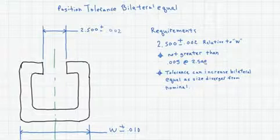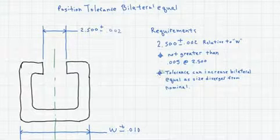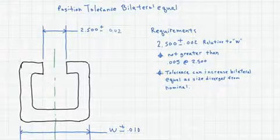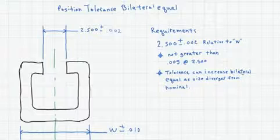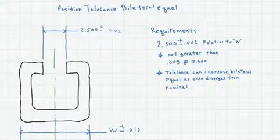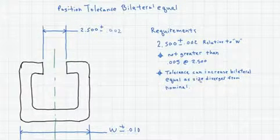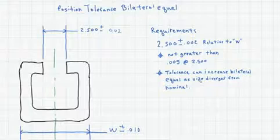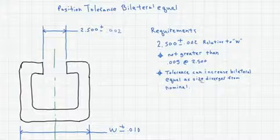Additionally, the positional tolerance can increase bilateral equal as the size of the cutout feature diverges from the nominal size.